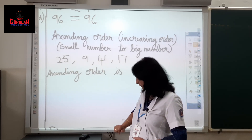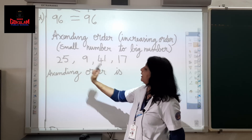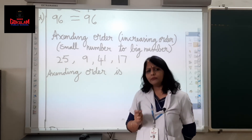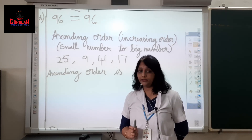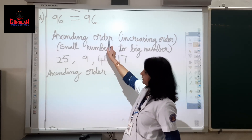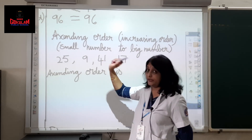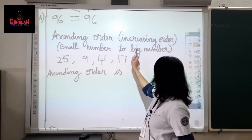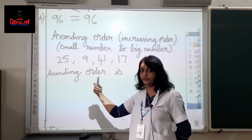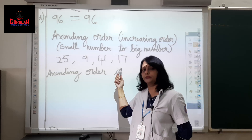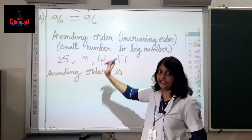Before I start, let me tell you — some of you have pet names, right? You have an official name and another name which your mama will call you. Ascending order is the official name and increasing order is its pet name. Always remember: ascending order means small number to big number. You have to find the smallest number, write it first, then the next bigger number, and last the biggest number.